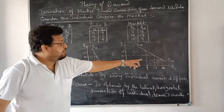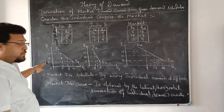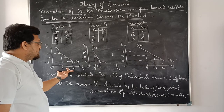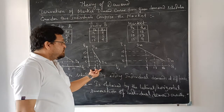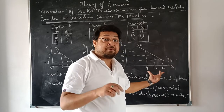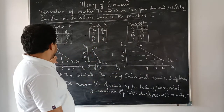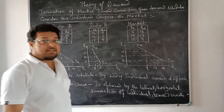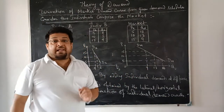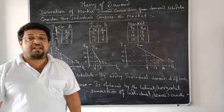The market demand curve DM is obtained by laterally summing up the individual demand curves. When the price was 5, consumer A demanded 10 units and consumer B demanded 8 units, so 18 units are demanded in the market at price 5. Similarly, at price 30 the market demand is 30, and at price 50 the market demand is 9. The demand curves are horizontally or laterally summed up to get the market demand curve.